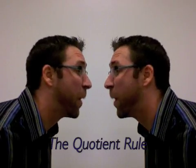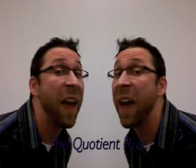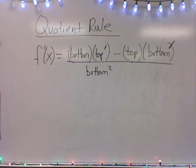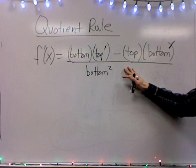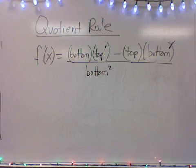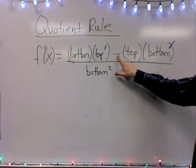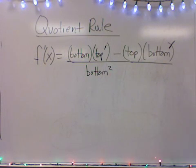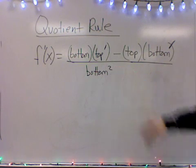For finding derivatives using the quotient rule, the basic frame looks something like this. Notice it looks a lot like the product rule, except it's a minus sign here. It's more complicated, too,